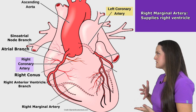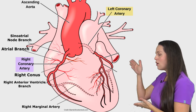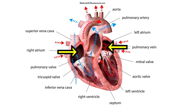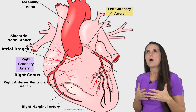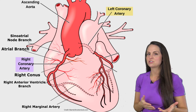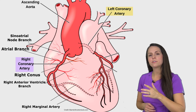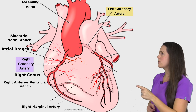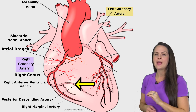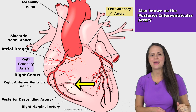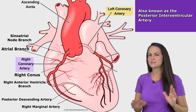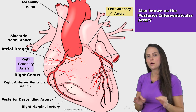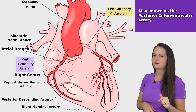Notice where these arteries are positioned. If we sliced this heart open, we could see the atria and ventricles, confirming that these arteries do indeed supply them. From here, our right coronary artery turns into another important branch known as the posterior descending artery. This artery also has another name — the posterior interventricular artery — so keep in mind there are two different names for this structure.